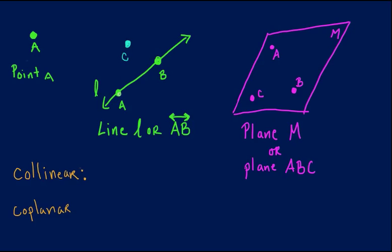Just like right here, point A and point B are on the line, so they are collinear. Point C is not.